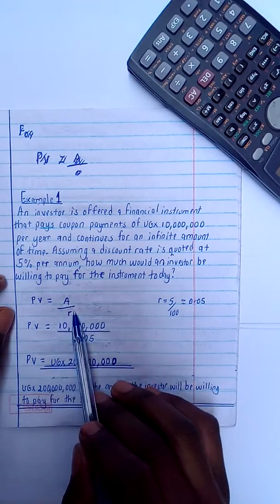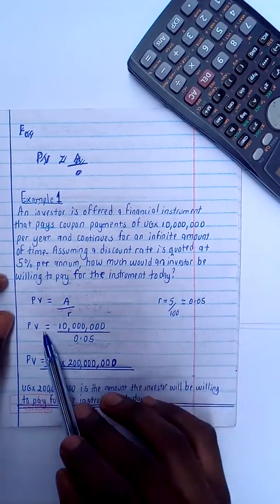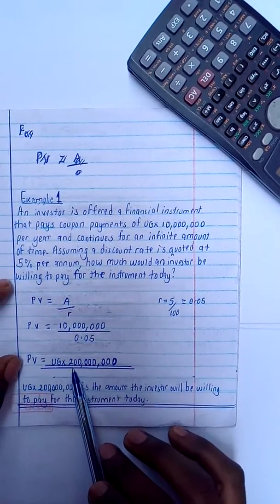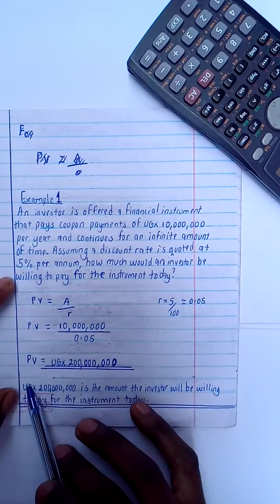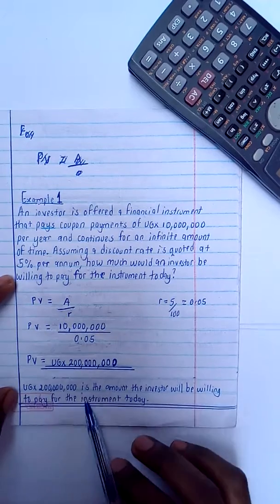So it will be by our formula: PV equals the instrument divided by the r, whereby r will be 5 divided by 100, giving me 0.05. So PV equals the 10 million divided by the 0.05. PV equals 200 million. Therefore, I conclude: 200 million is the amount the investor will be willing to pay for the instrument today.